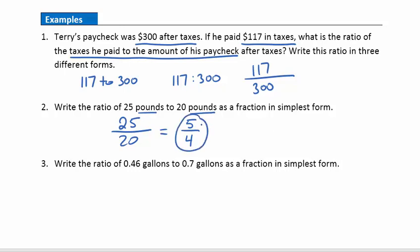Example three. Write the ratio of 0.46 gallons to 0.7 gallons as a fraction in simplest form. So we're looking at 0.46 gallons over 0.7 gallons. And we want to write this as a fraction in simplest form. Well, fraction in simplest form does not have any decimals in it. So what we want to do is we want to clear these decimals out of the fraction to begin with. Notice up here I would need to move the decimal two places. Down here just one.